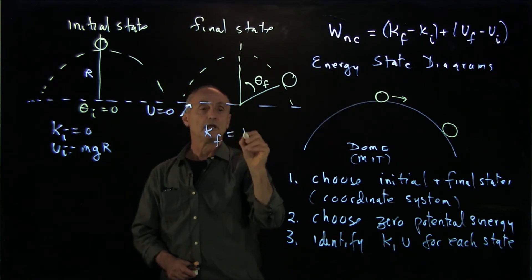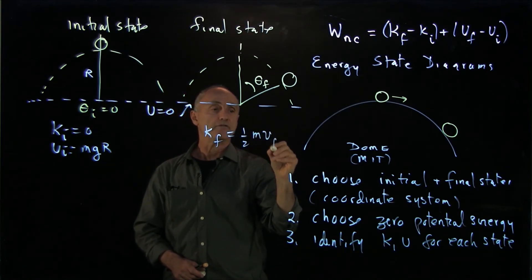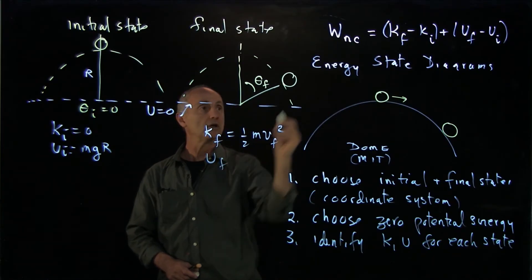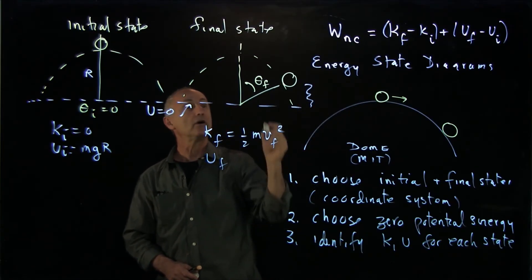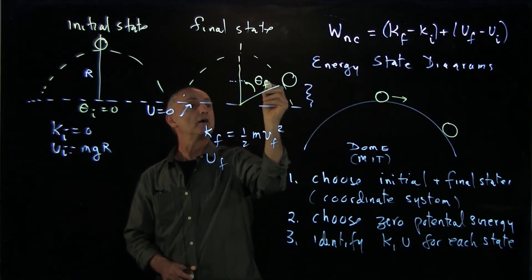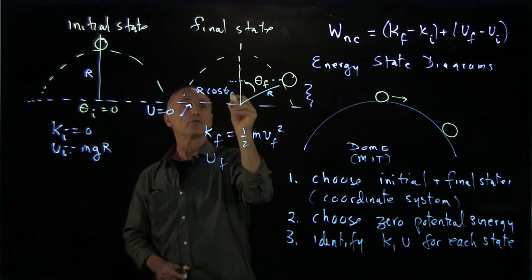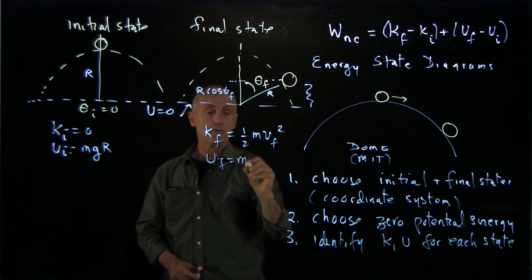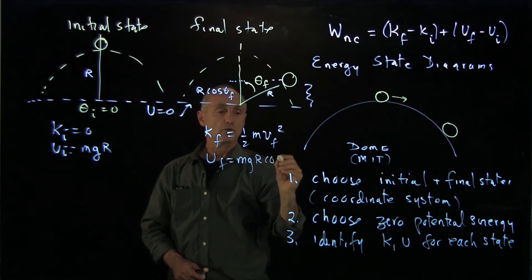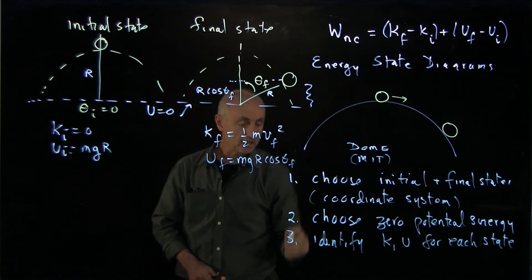Now, over here, K final is 1/2 m v final squared. And U final, we can denote it here. If I plot this out, and that's r, then you can see that this is r cosine theta final. So that's mg r cosine theta final.